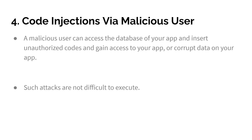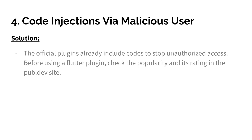The next one is code injection via malicious user. A malicious user can access the database of your application and insert unauthorized code to gain access to your app or corrupt data, and such attacks are not difficult to execute. Basically nowadays all official plugins already include code to stop this attack. So before you use a Flutter plugin, check the popularity and the rating on pub.dev and make sure that it is popular, up to date, and that many users have approved it.